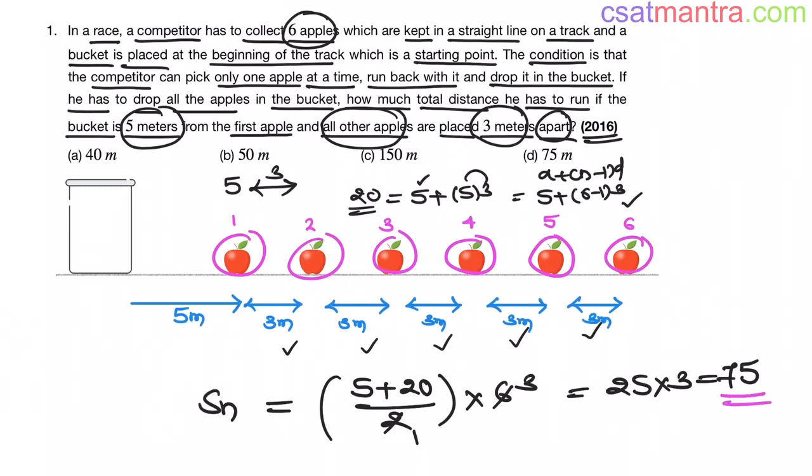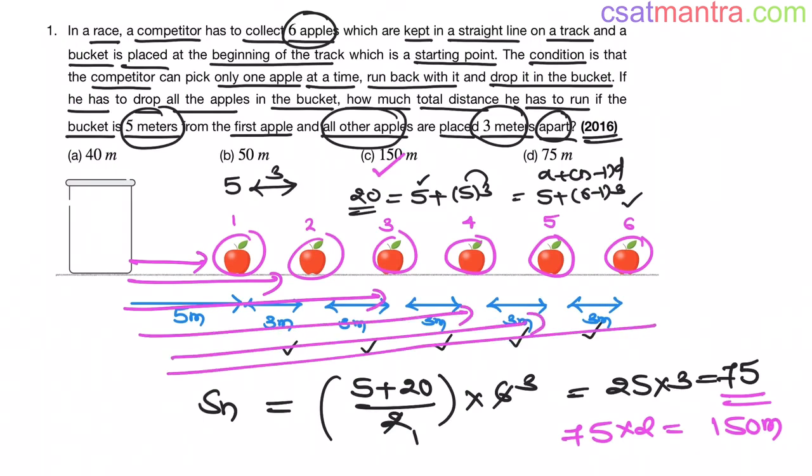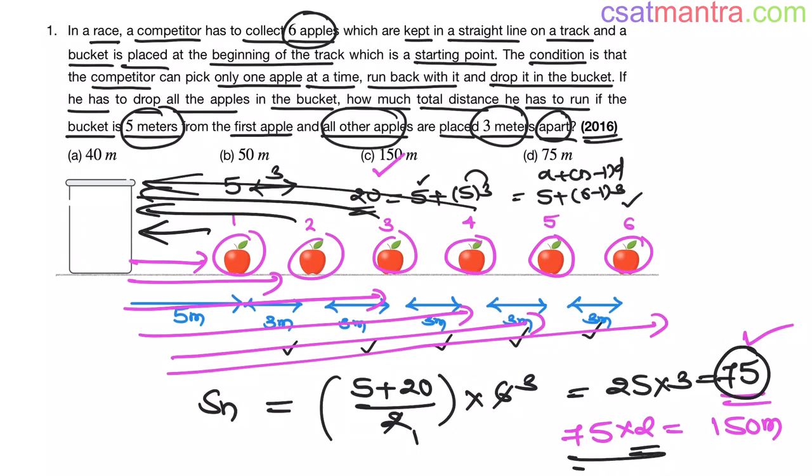But the competitor has to travel backwards also. He has to run back. So the total distance he would have travelled is 75 into 2, that is 150 meters. So our answer is C. See, we have calculated sum of these distances. Now you have to multiply it with 2 right, because he is running backwards also. So that is why I have multiplied it with 2. So our answer is 150 meters.